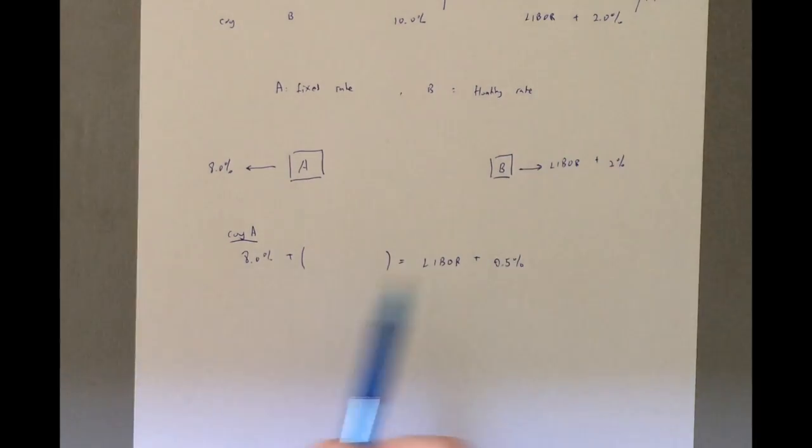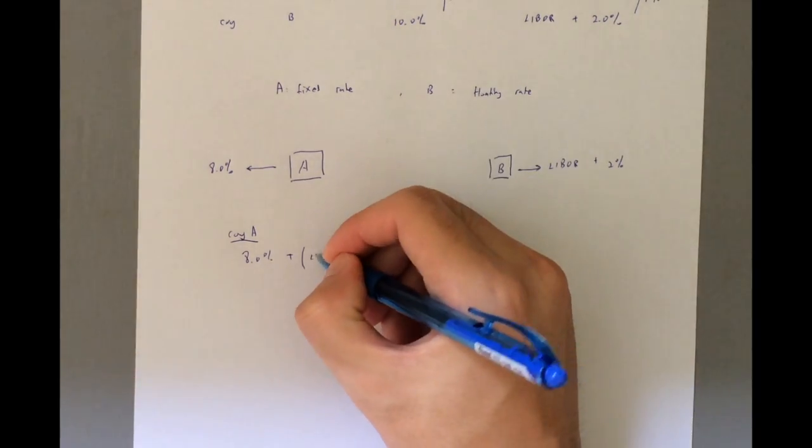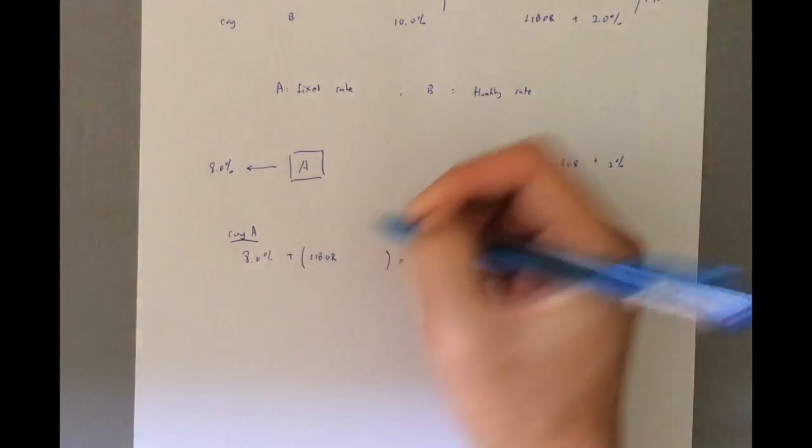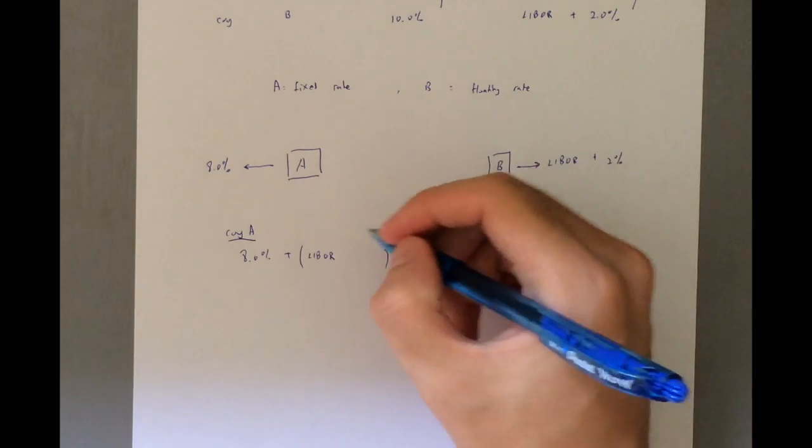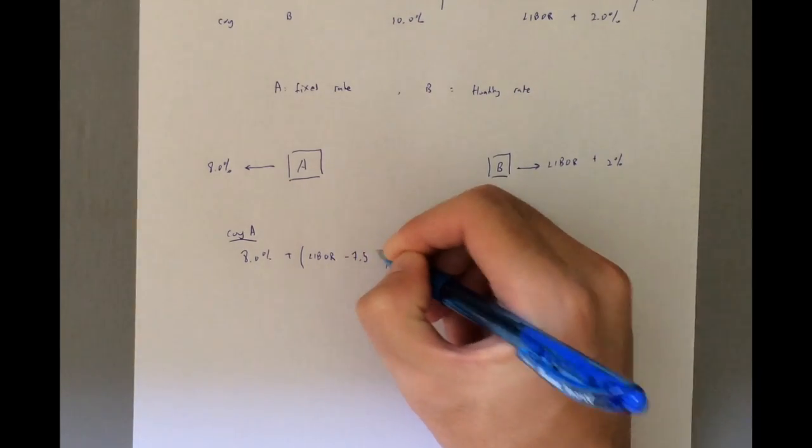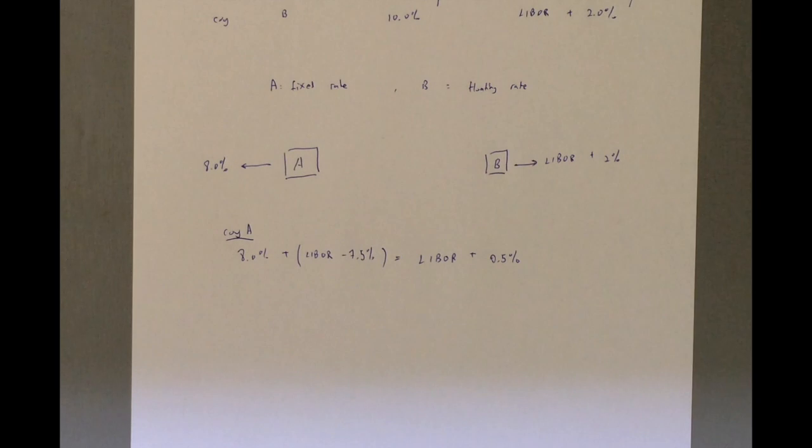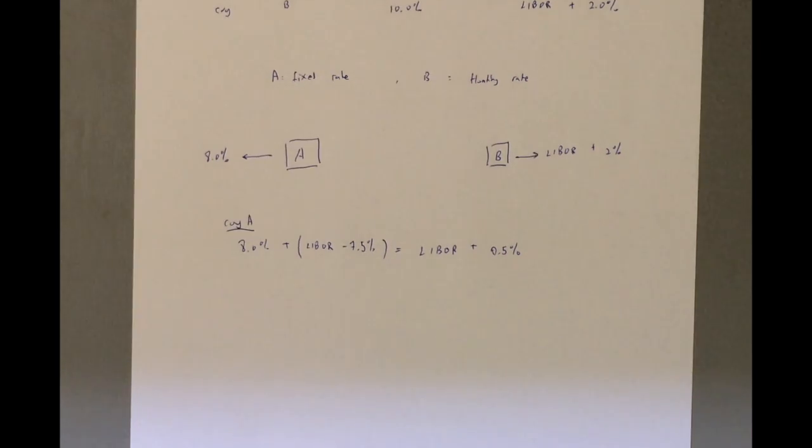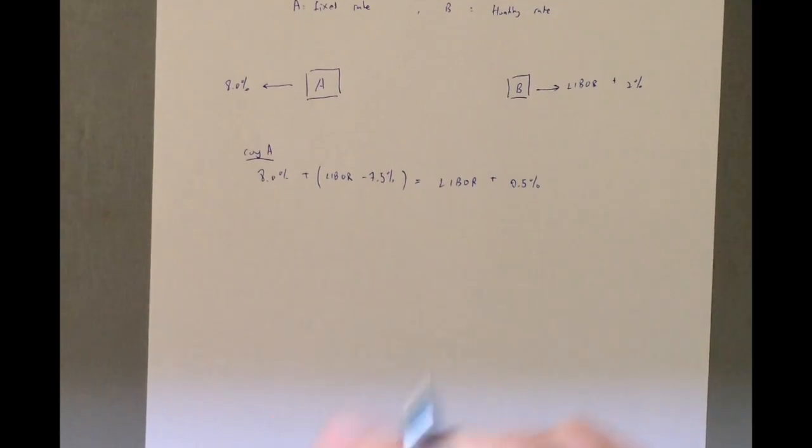Okay, so how do we get from here to here is we need to add LIBOR, and how do we get from here to here is to minus 7.5%. Okay, so far? Okay. Now next, you can also do this from the part of Company B.